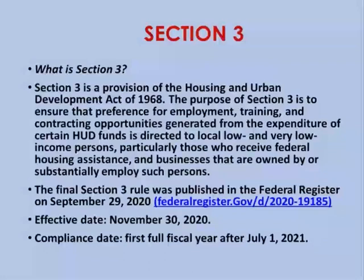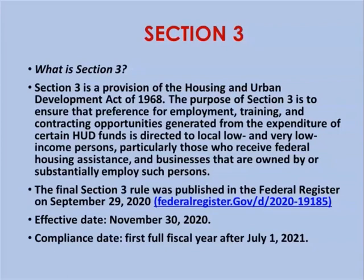What is Section 3? It's the provision of the Housing and Urban Development Act of 1968 that ensures a preference for employment training and contracting opportunities generated from the expenditure of certain HUD funds, and that those opportunities are directed to low and very low-income persons — especially those who receive federal housing assistance — and for businesses owned by or substantially employing such people. The final Section 3 rule was published in the Federal Register on September 29, 2020, replacing an interim rule that had been in place since about 1994.